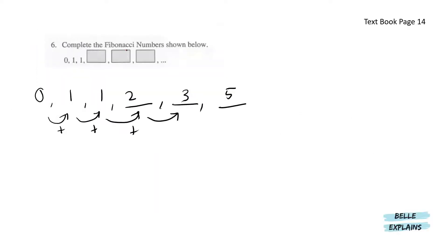Complete the Fibonacci numbers shown below. So 0, 1, 1, dash, dash, dash. From here, 0 plus 1 is 1. 1 plus 1 is 2. 1 plus 2, we get 3. 2 plus 3, we get 5.